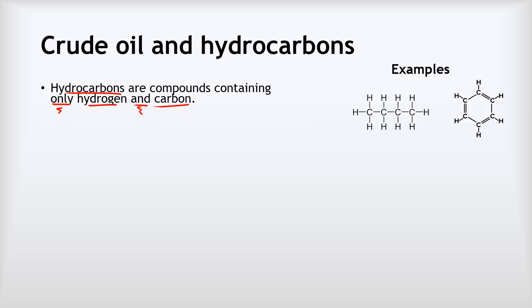Let's look at some examples. This first one on the left is something called butane — we'll meet this in more detail later. Butane is made out of hydrogen atoms, there are 10 of those, and a whole load of carbon atoms, and importantly nothing else, just hydrogens and carbons. So it is a hydrocarbon. On the right here we've got benzene, a really important chemical. This contains a whole load of carbons and hydrogens and again nothing else. It doesn't matter that in this case we've got some double bonds — there are still only hydrogens and carbons, so it's still a hydrocarbon.